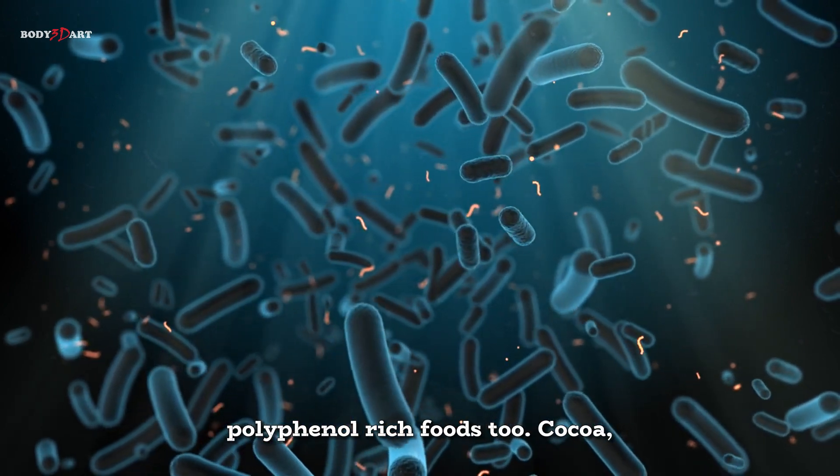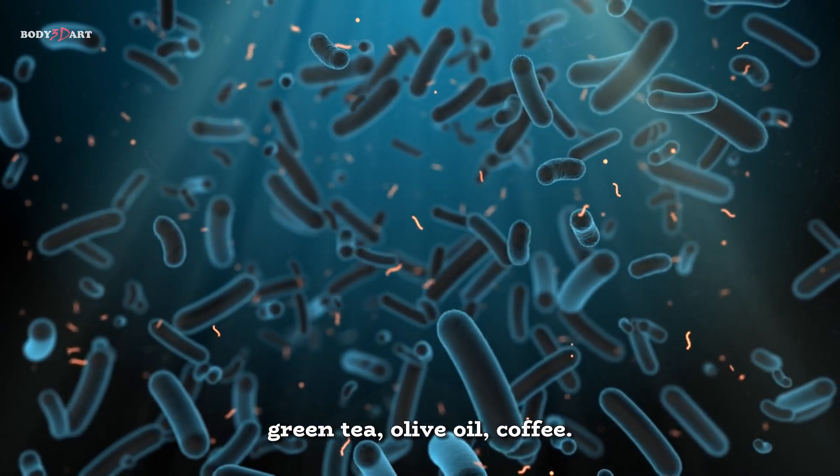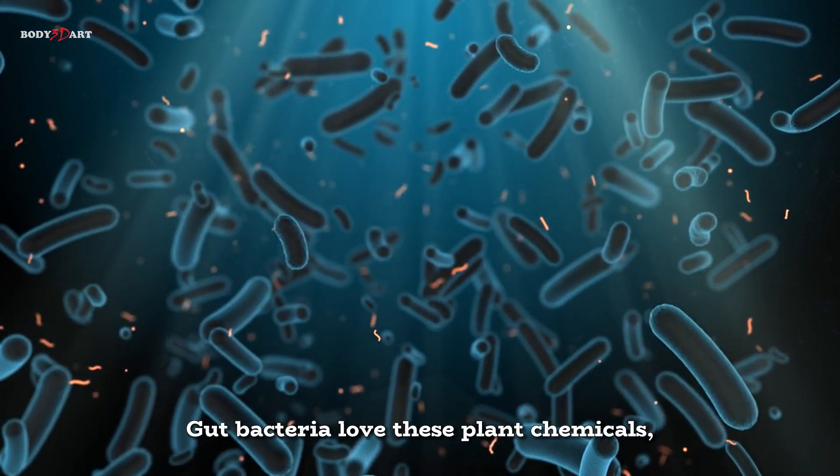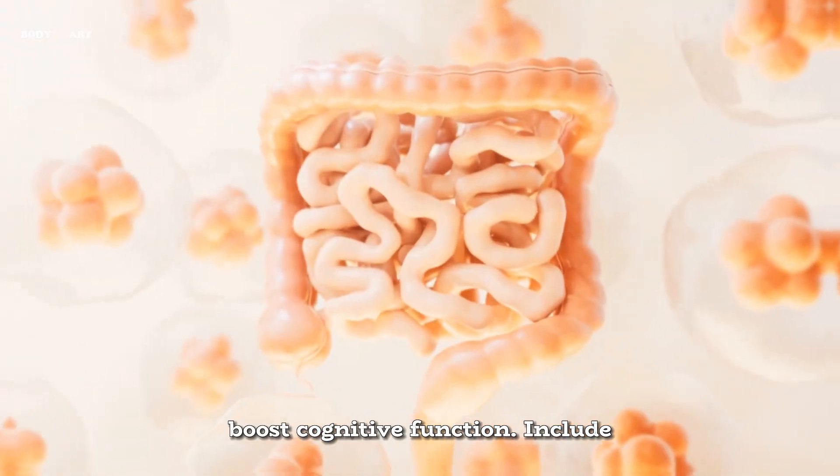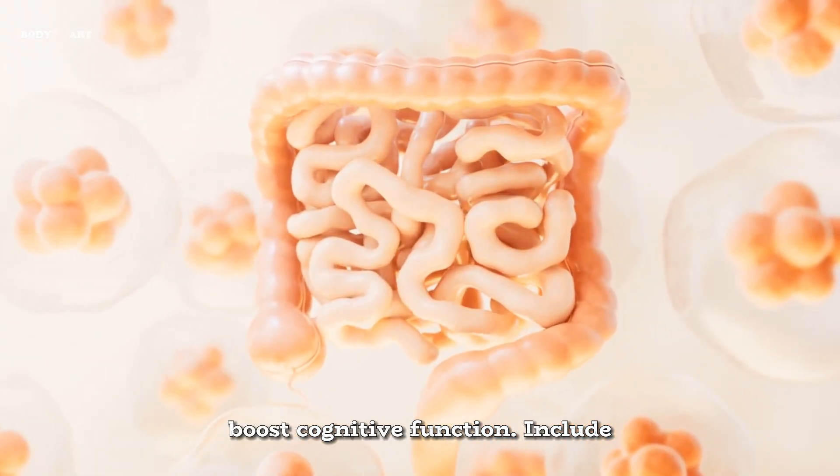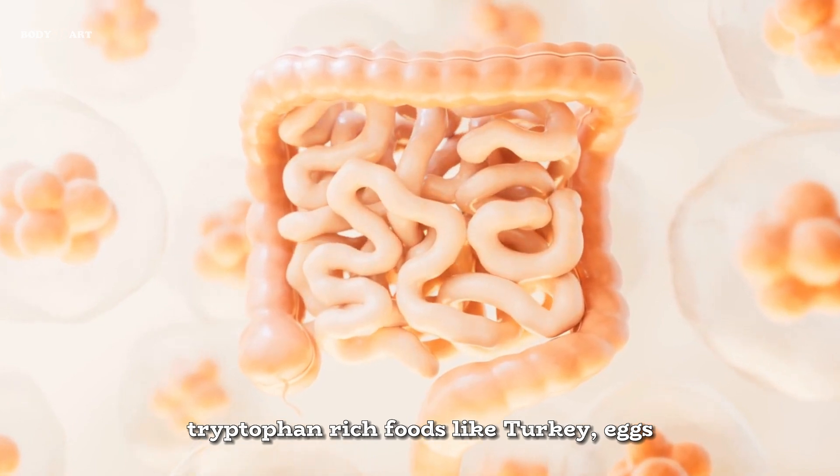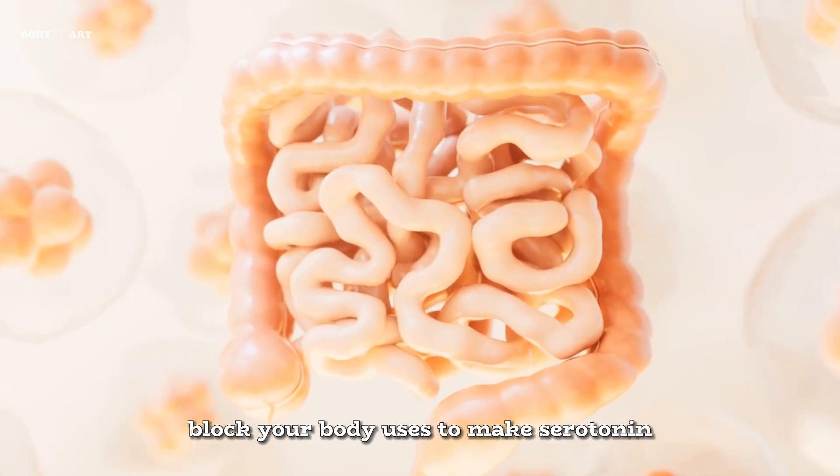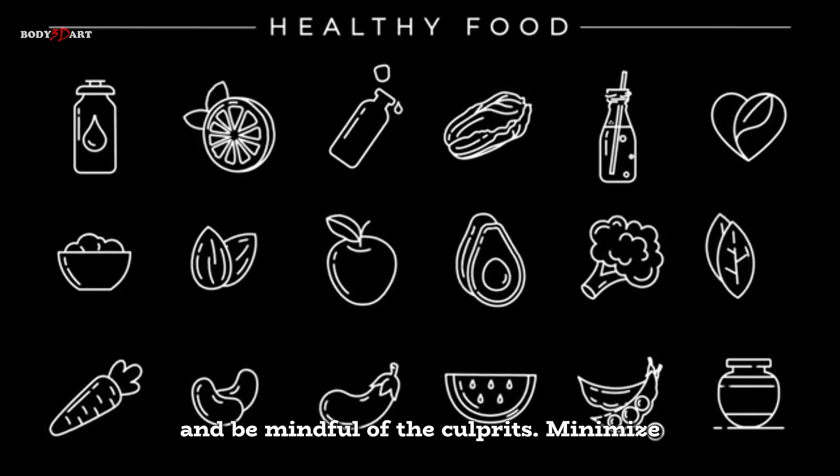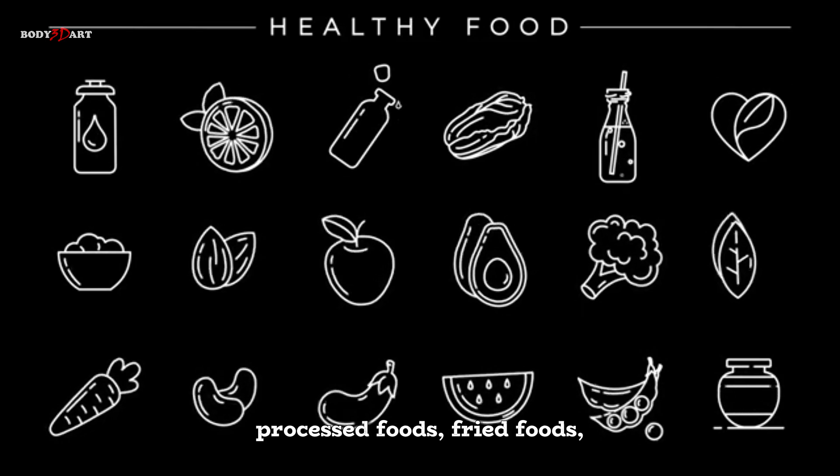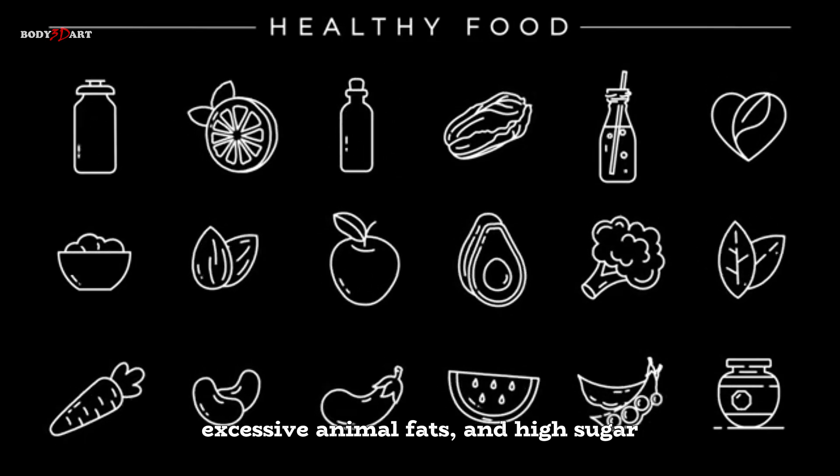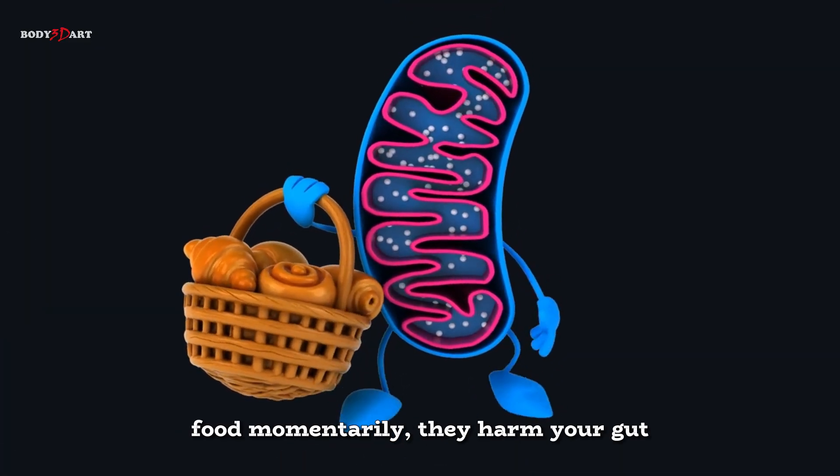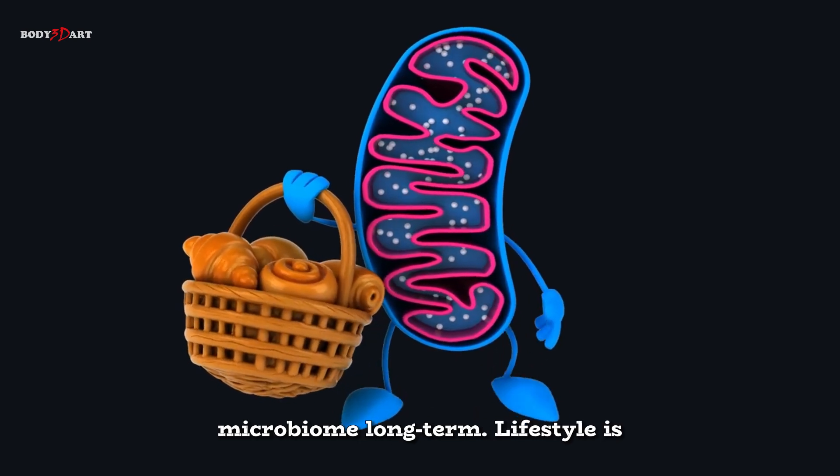Power up with polyphenol-rich foods too - cocoa, green tea, olive oil, coffee. Gut bacteria love these plant chemicals, which encourage healthy microbes and may boost cognitive function. Include tryptophan-rich foods like turkey, eggs and cheese. Tryptophan is the building block your body uses to make serotonin. And be mindful of the culprits. Minimize processed foods, fried foods, excessive animal fats and high sugar items. While they might feel like comfort food momentarily, they harm your gut microbiome long-term.